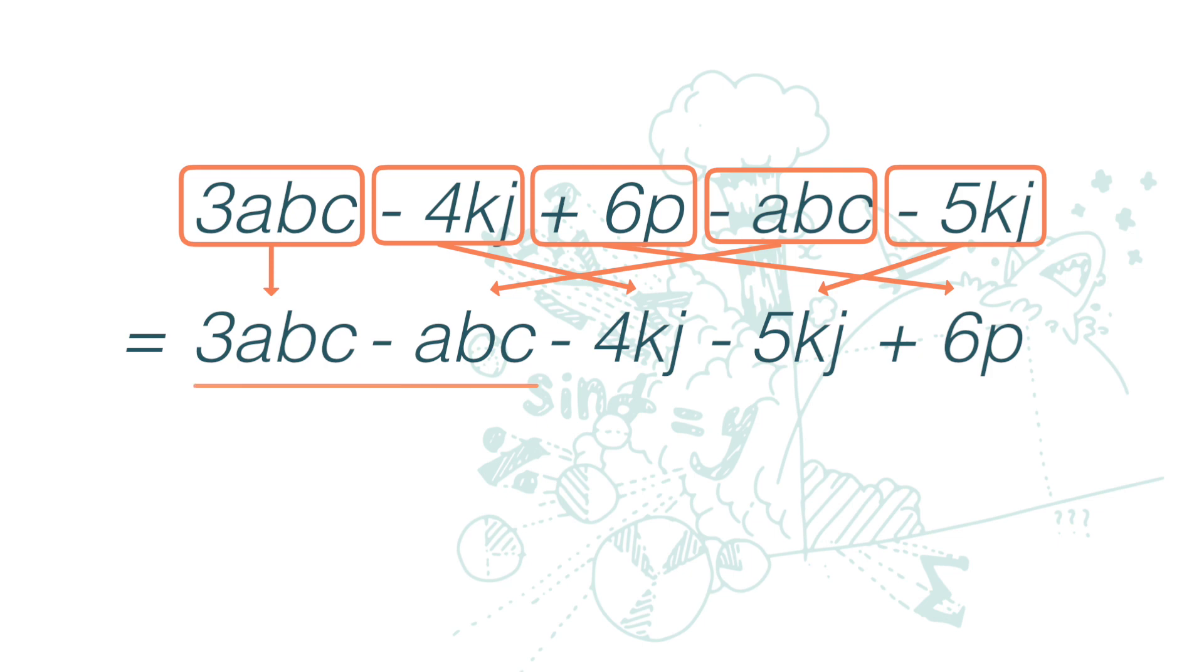So 3abc minus abc we get 2abc. Negative 4kj minus 5kj is negative 9kj. 6p is left as it is.